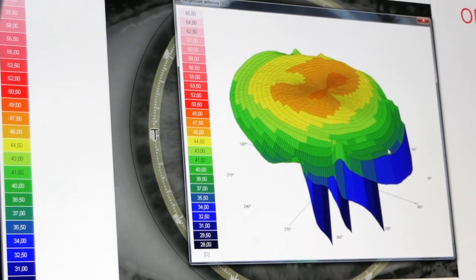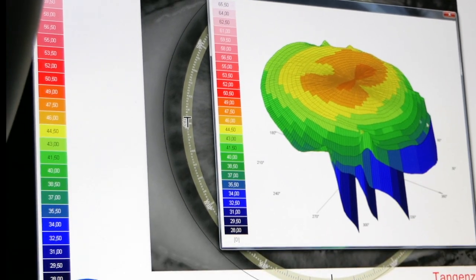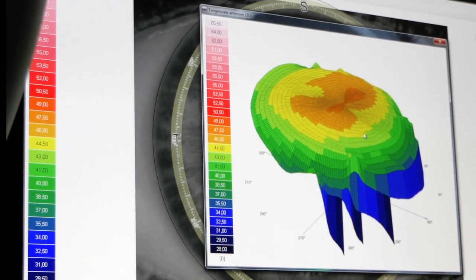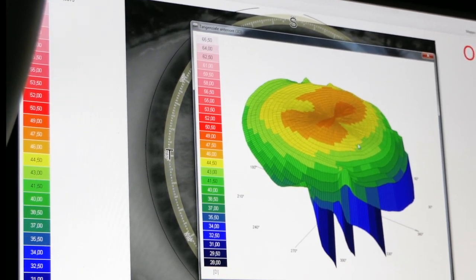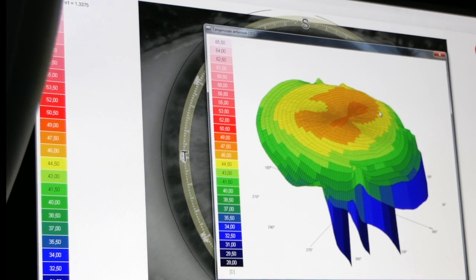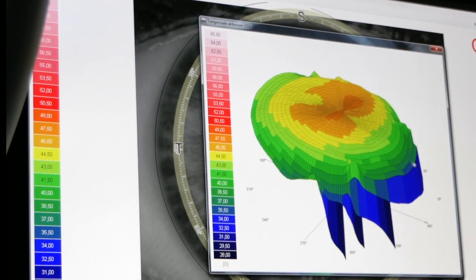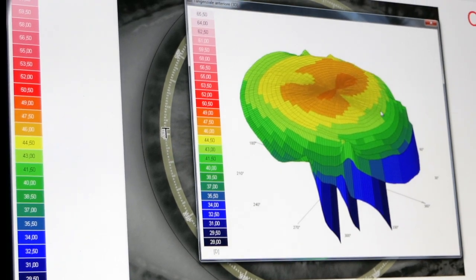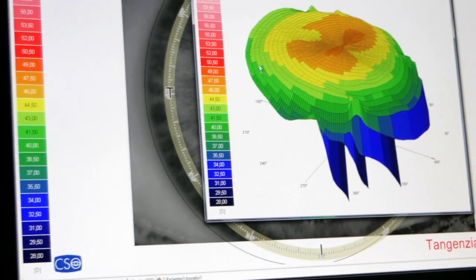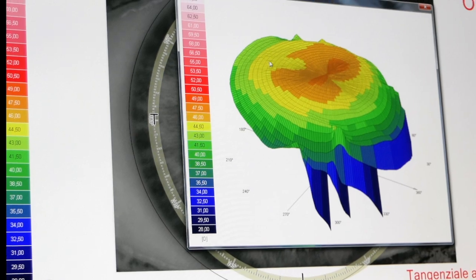Looking at it in three dimensions, we see that this part is flatter and this is more curved. And this has the purpose of making the cornea aspherical, not spherical. It is not an ideal sphere, but more curved in the center and flatter in the periphery.